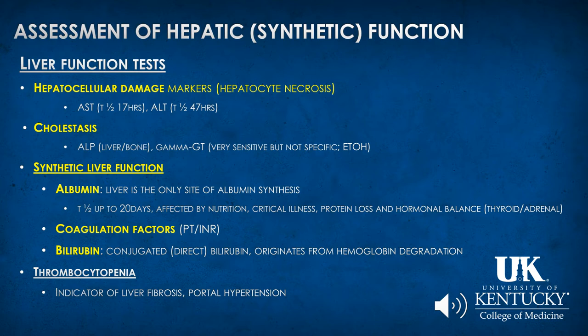Markers of synthetic liver function include albumin, coagulation factors, and bilirubin, because they truly represent what the liver synthesizes. Albumin is only produced by the liver and has a half-life of up to 20 days. Changes in albumin level are not only related to lack of liver production but also to nutrition, critical illness as an acute phase reactant, stress response, protein loss, and hormonal imbalances.